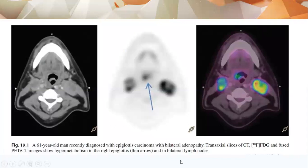This is an example of a 61-year-old man recently diagnosed with epiglottic carcinoma, presented in the axial CT scan, axial PET, and a fusion FDG PET-CT. There is a focal area of intense hypermetabolism in the right epiglottis associated with bilateral cervical lymph nodes.